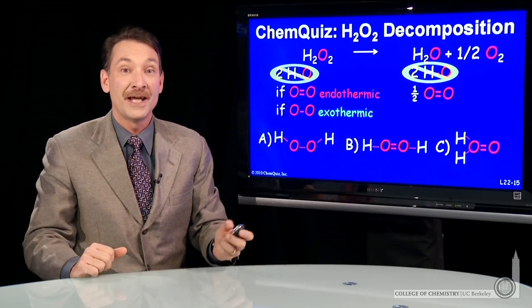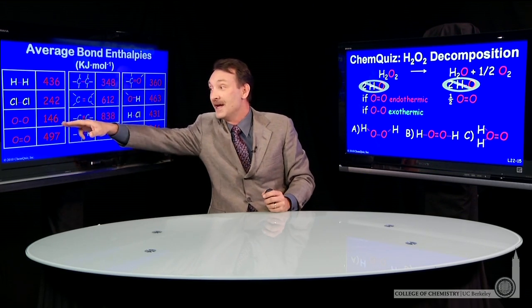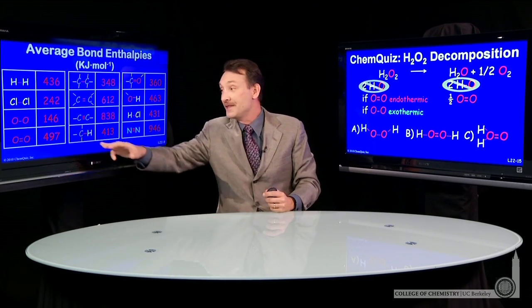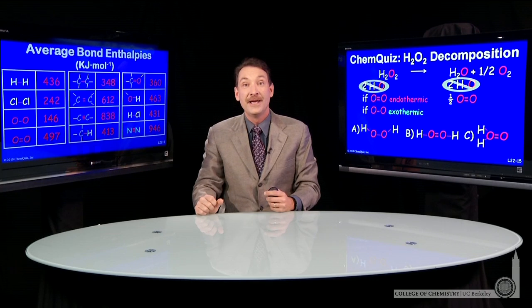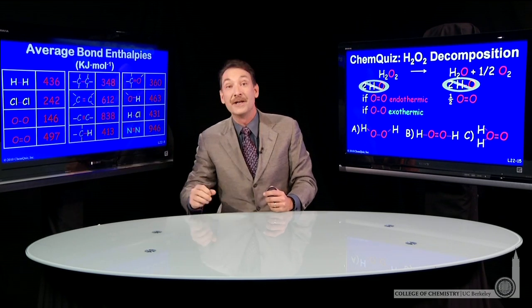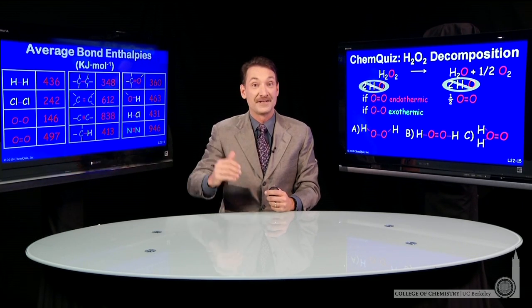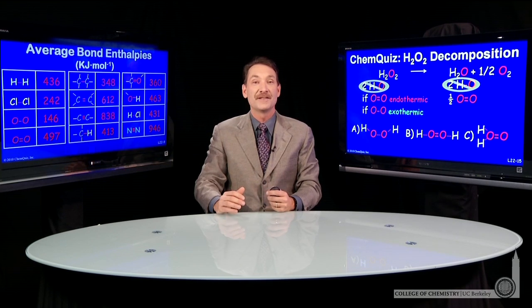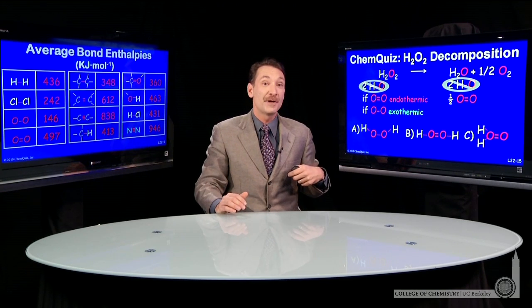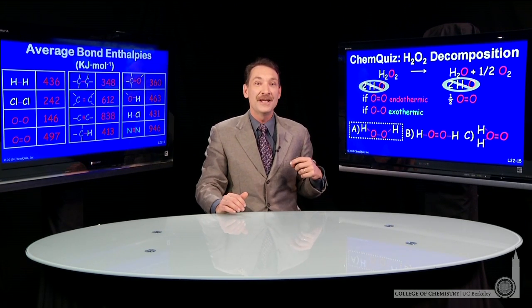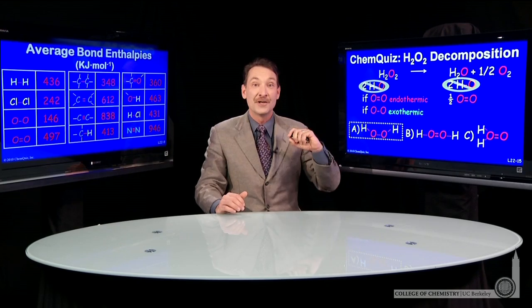Here we have the oxygen-oxygen single bond, the oxygen-oxygen double bond. And indeed, the double bond is more than twice as strong as the single bond. So that will give us a net exothermic reaction. And the correct answer here is A, the single bonded structure.